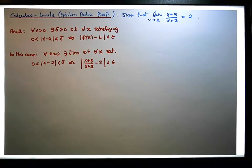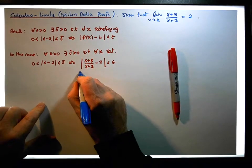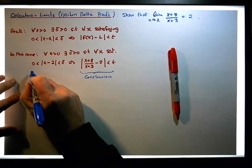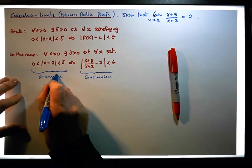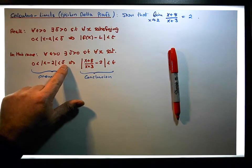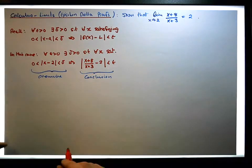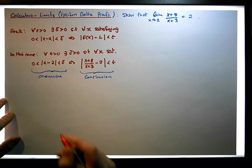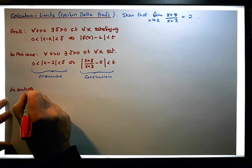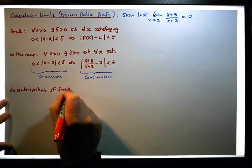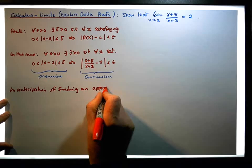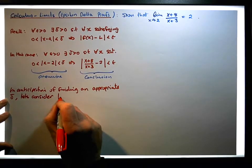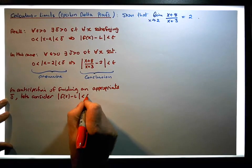And like all of our proofs, what we're going to do is start with the conclusion of this particular implication and reduce the conclusion down into something that looks like the premise. Hopefully what we'll end up with is the premise in terms of some multiple of epsilon. So in anticipation of finding an appropriate delta, let's consider the absolute value of f(x) minus L less than epsilon — let's consider this particular conclusion.